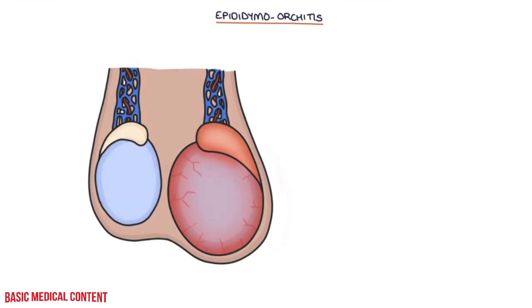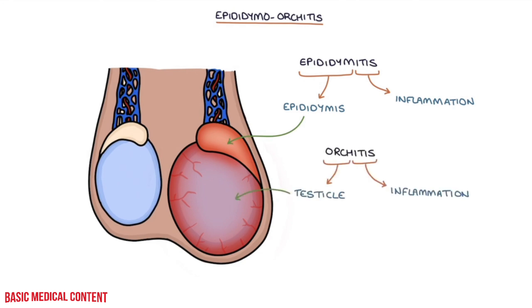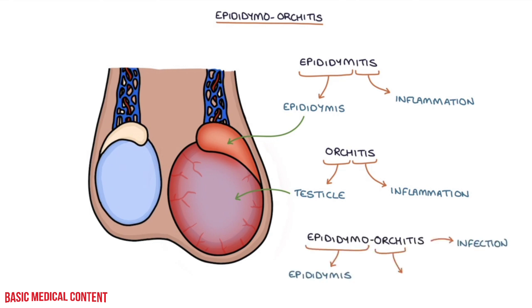In this video I'm going to be going through epididymo-orchitis. Epididymitis is inflammation of the epididymis, and orchitis is inflammation of the testicle. Epididymo-orchitis is usually the result of infection in the epididymis and the testicle on one side.